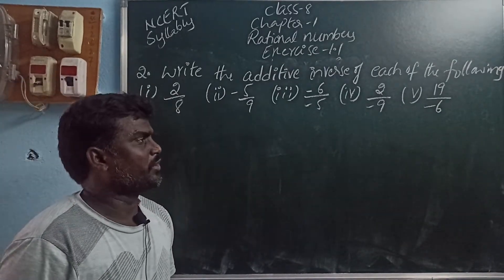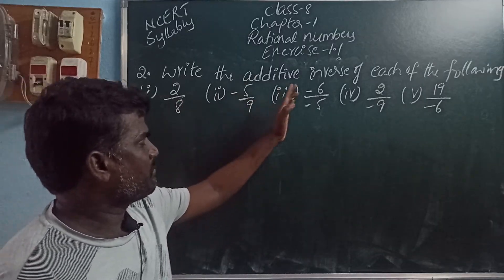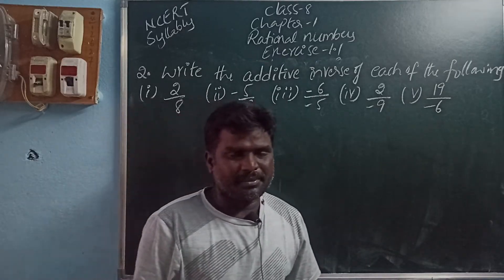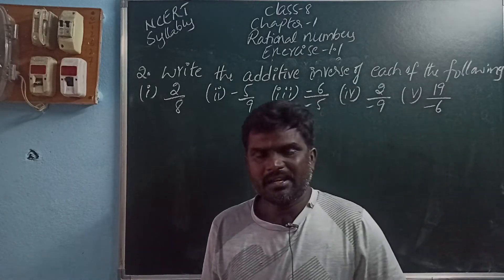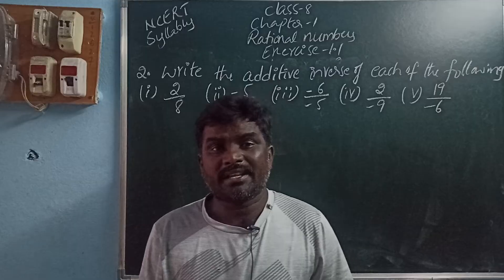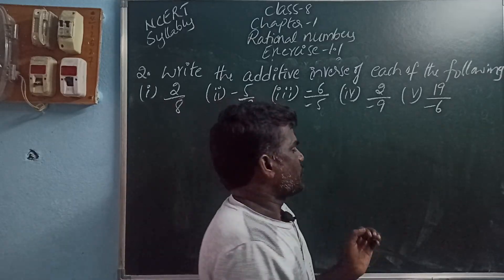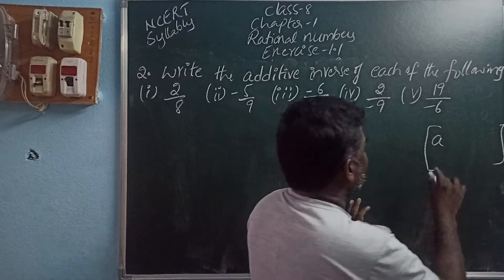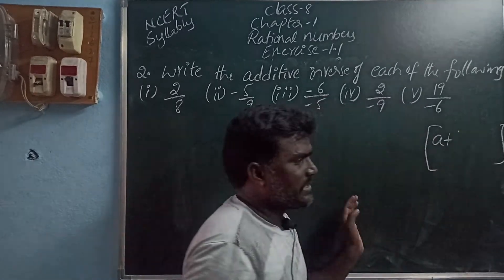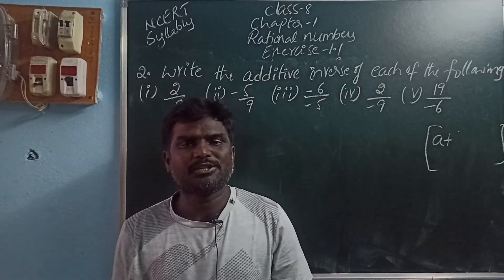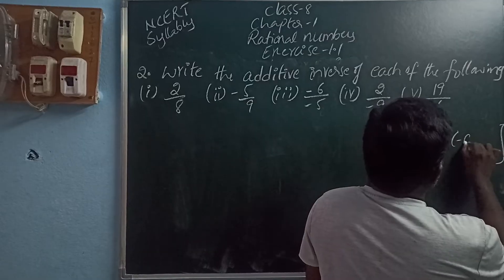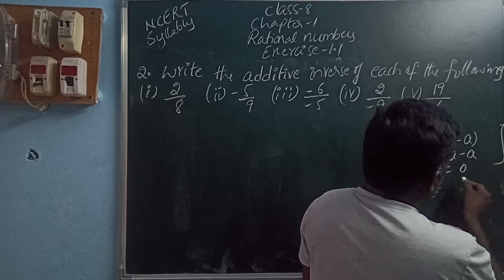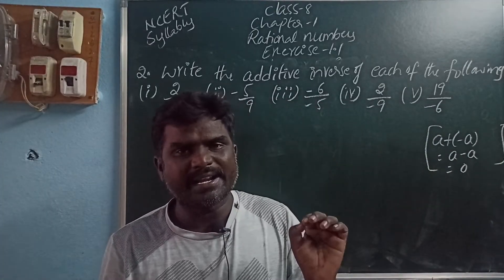Write the additive inverse of each of the following: 2 by 8, minus 5 by 9, minus 6 by minus 5, 2 by minus 9, 9 by minus 6. For additive inverse: if any number is added to its inverse, we get the identity element. That property is called the inverse property. In addition, A plus its inverse gives zero. So A plus minus A equals zero, and zero is the identity element for addition.